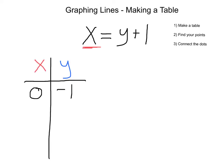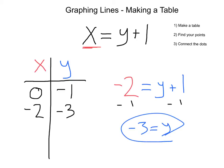From there, let's go ahead and pick another x value. How about negative two? Alright, we want to take that negative two, plug it right in for x. That's going to give us negative two equals y plus one. Solve from there. We'll subtract one from both sides. That's going to give us negative three equals y. And that leaves us with the point negative two, negative three.